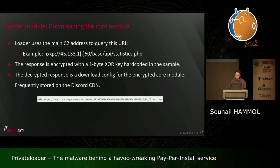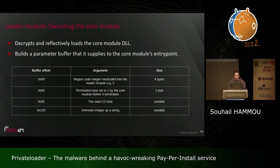When a request is sent to the C2 endpoint, it responds with an encrypted response using a one-byte XOR key hard-coded in the sample. This encrypted response is a download configuration for the encrypted core module, usually stored on the Discord CDN with a .bmp extension, though recently they've also used private infrastructure. The loader module then decrypts and reflectively loads the core module DLL, building a parameter buffer supplied to the core module's entry point. Two important fields are a region code integer hard-coded inside the loader module, and the main C2 host retrieved by the loader.